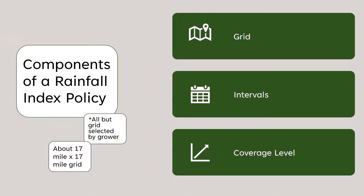To determine your coverage, you provide your farm's address or coordinates and they assign you a grid — approximately 17 miles by 17 miles — with known historical rainfall data. You then select intervals, which are two-month periods, such as April–May or July–August. They tell you the average rainfall for those intervals, and you pick your coverage level, which is the percentage of average rainfall below which you'll receive a payment.